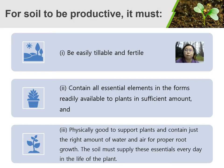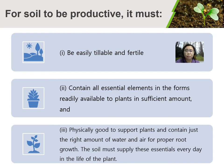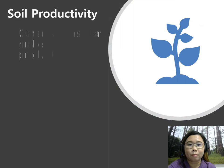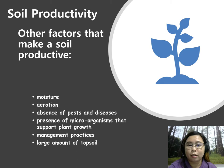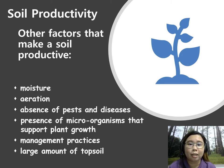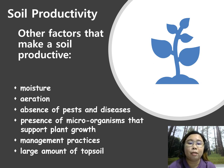For soil to be productive, it must have the following characteristics: it must be easily tillable and fertile, contain all essential elements in forms readily available to plants in sufficient amounts, be physically good to support plants, and have the right amount of water and air for proper plant growth. Other factors that make a soil productive include moisture content, aeration, absence of pests and diseases, presence of microorganisms that support plant growth, good management practices, and a large amount of topsoil.